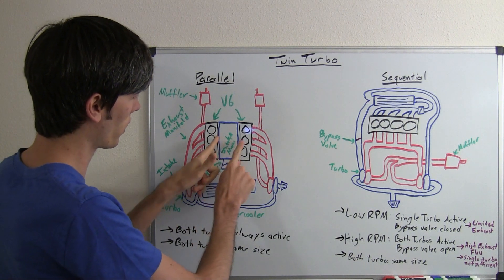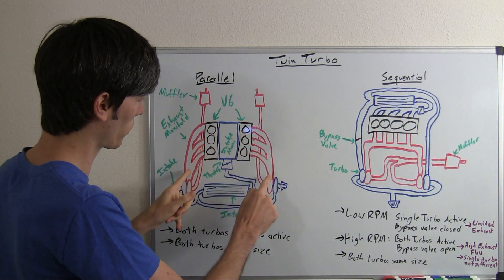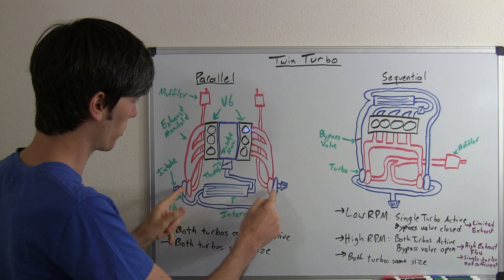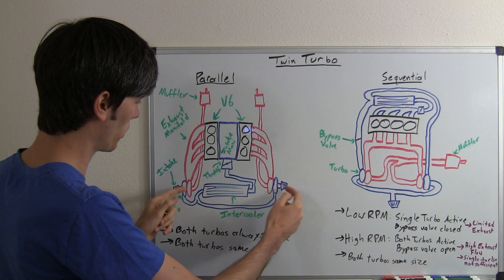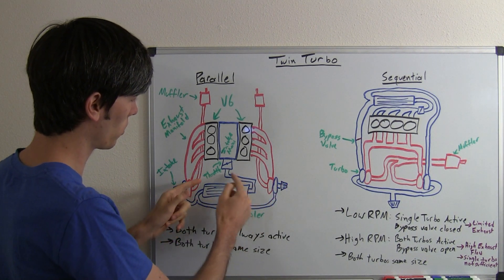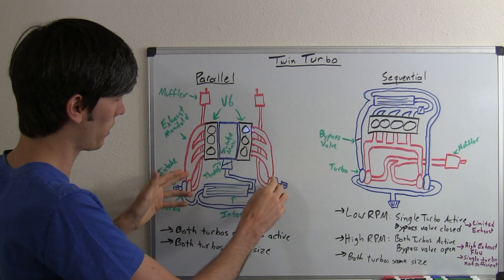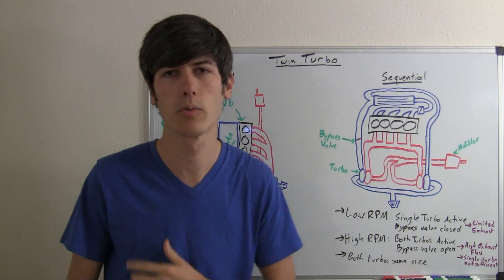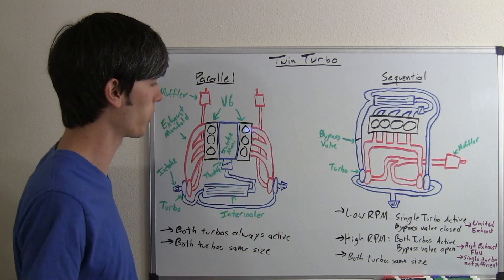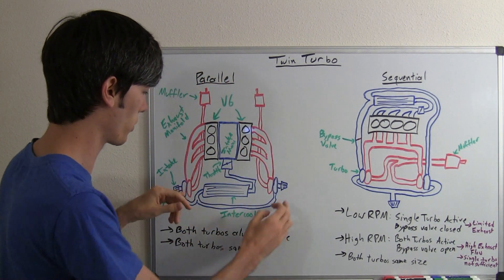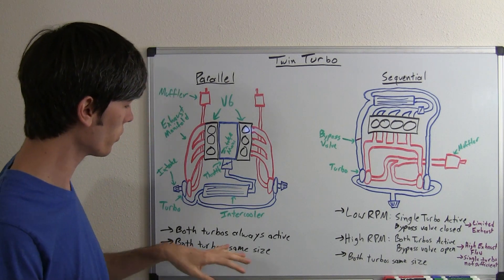Basically during your exhaust stroke, you're going to have exhaust come out through these exhaust manifolds, spin up the turbos, the turbos are going to pull in air, the air will go through the intercooler, through the throttle to the intake manifold, to the cylinders, and then repeat that process. So it's just like with a regular turbocharger. The only difference is you've got two cylinder banks, so you split up the work between two turbochargers.